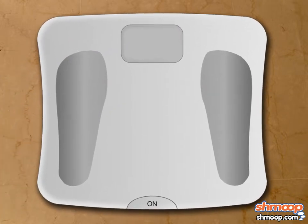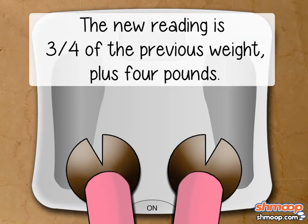The scale has been rigged so that each time Pudgy steps onto it, the new reading is three-fourths of the previous weight plus four pounds.